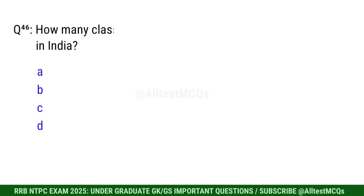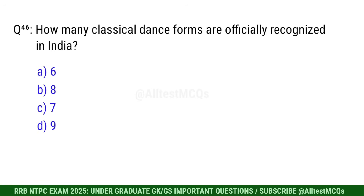Q46. How many classical dance forms are officially recognized in India? Right option is B. Eight.